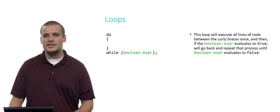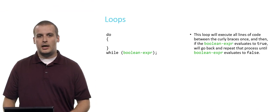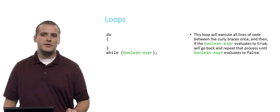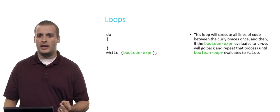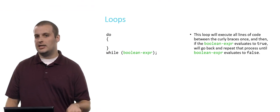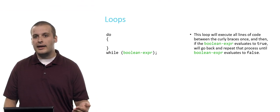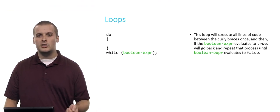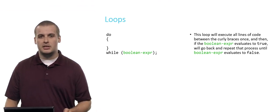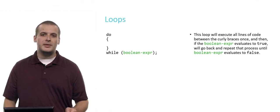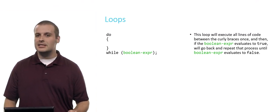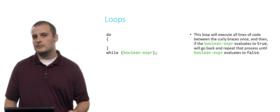The next kind of loop is actually pretty similar. It's called the do while loop. This loop will execute all of the lines of code between the curly braces once, and then it will check the Boolean expression. If the Boolean expression evaluates to true, it'll go back and repeat that process over and over until the Boolean expression evaluates to false. So this loop, unlike a while loop, is guaranteed to run at least one time. This could be pretty useful.